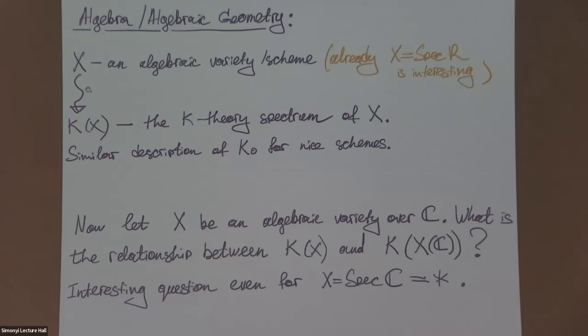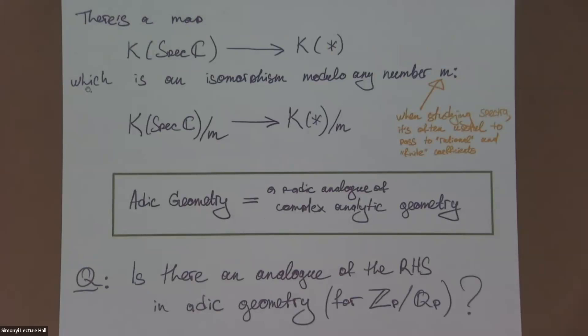Now you can ask the following question. Let X be an algebraic variety over ℂ. We're in the realm of complex analytic geometry. What is the relationship between the two K-theories that we can construct? We can view X as an algebraic variety over ℂ and produce its algebraic K-theory, or we can pass to the set of its complex points, and now it's a topological space, and now we can construct its topological or complex K-theory.